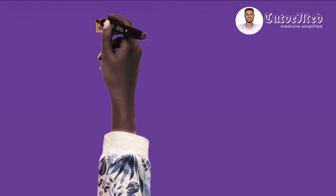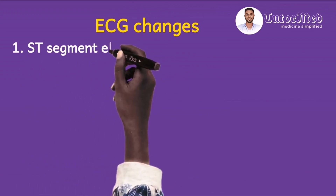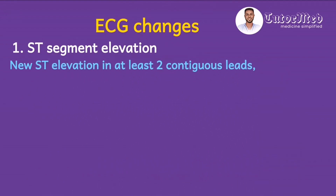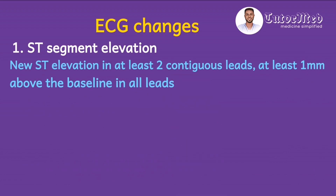Having established these principles, let's look at the universally accepted criteria for ECG changes of ST elevation myocardial infarction. For ST segment elevation, the rule states there should be new ST elevation in at least two contiguous leads — for example, leads 2, AVF, and lead 3. The ST elevation must be at least one millimeter above the baseline in all leads. If this occurs, the patient can be considered to have STEMI, correlating with the clinical presentation.